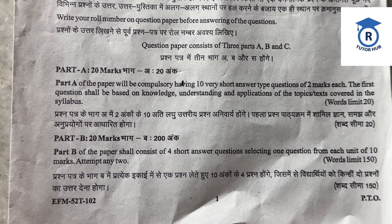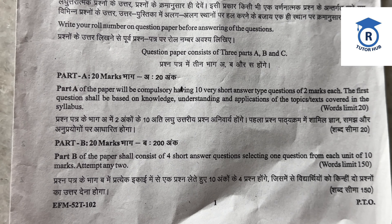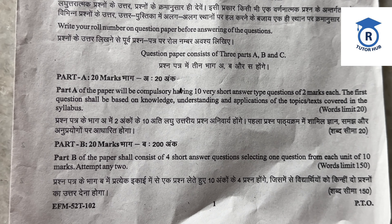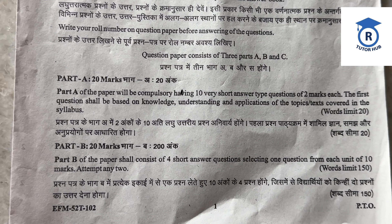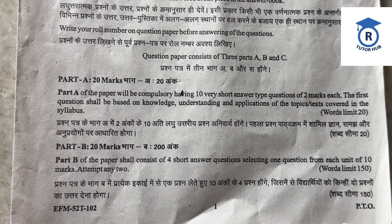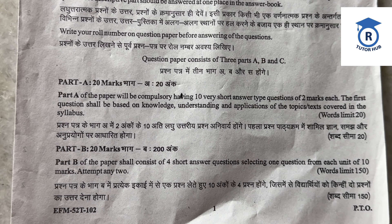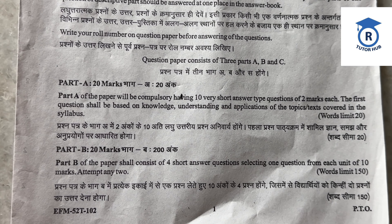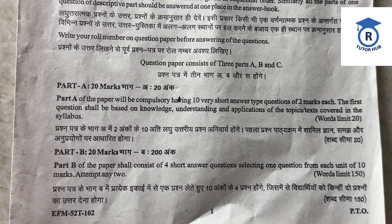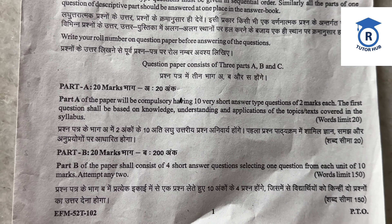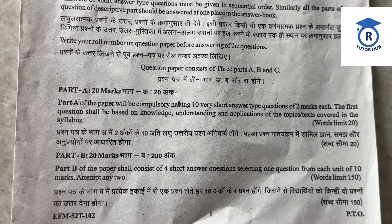Now the paper pattern. The question paper consists of 3 parts: A, B, and C. Part A is of 20 marks — it will be compulsory, having 10 very short answer type questions of 2 marks each. Part A mein 10 questions given hain, jo ki 2 marks each ke hain. The first question shall be answered on knowledge, understanding, and applications of the topic text covered in the syllabus. Ye Part A ke sare questions karna compulsory hai.